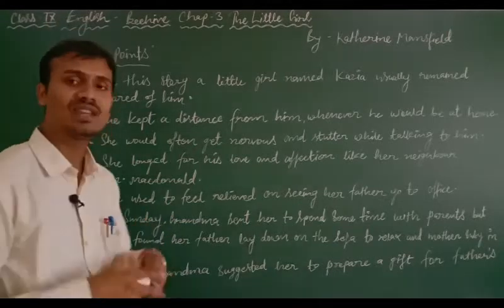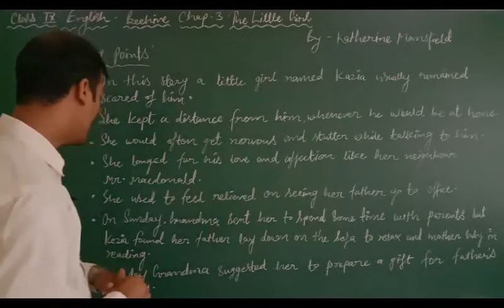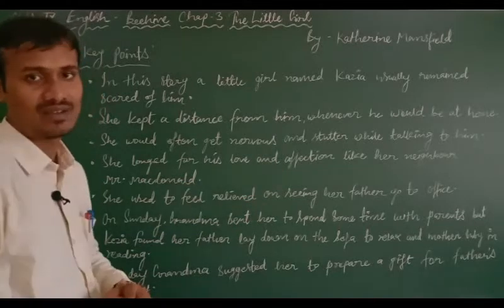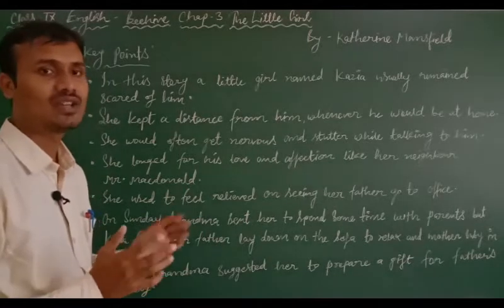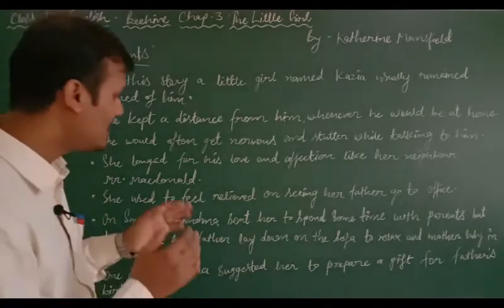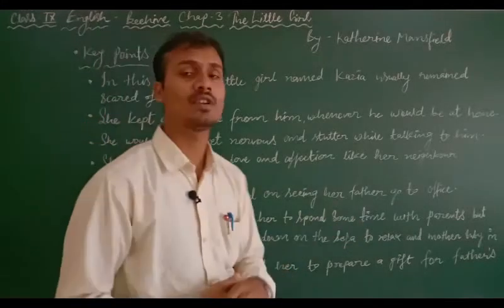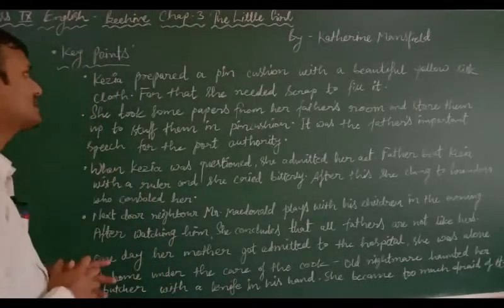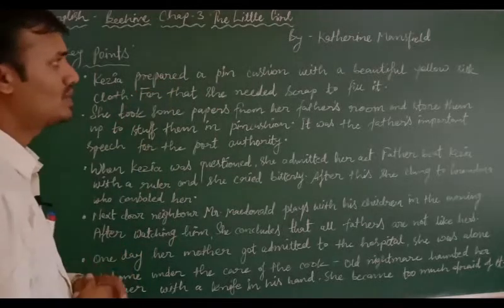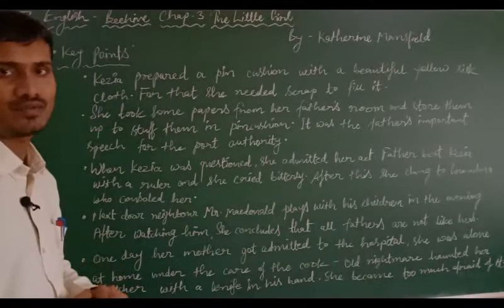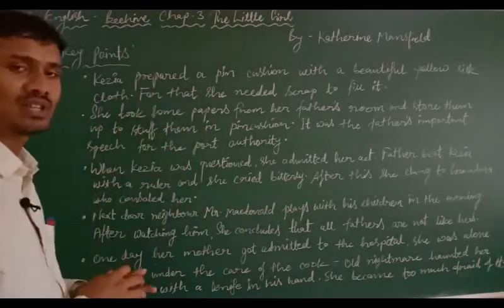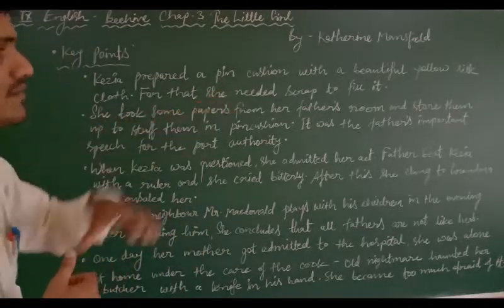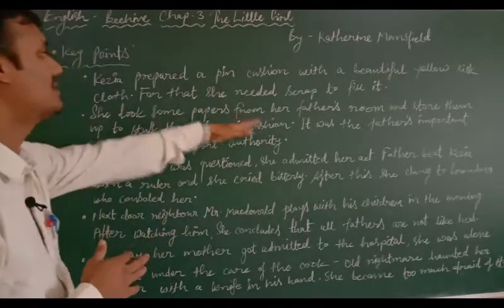On one Sunday, Kezia's grandmother sent her to spend some time with her parents, but Kezia found her father lying on the sofa to relax and her mother busy reading, so she came back without chatting with them. One day, Kezia's grandmother suggested she prepare a gift for her father as his birthday was near. So she prepared a pincushion with a beautiful yellow silk cloth, and for that she needed some scrap to fill it. She took some papers from her father's room and stored them to stuff into the pincushion.